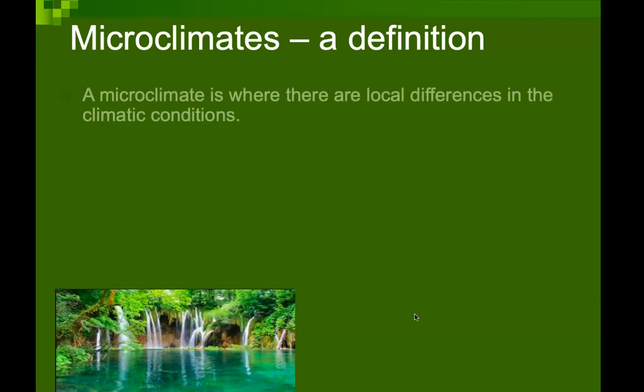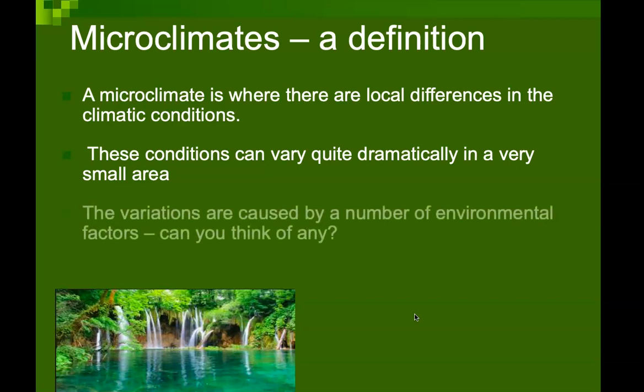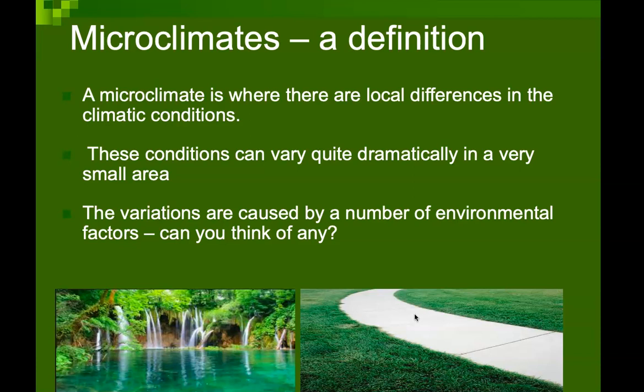Hello friends, today we are going to discuss about microclimate. Microclimate is where there are local differences in the climatic conditions due to some prevailing local features. These conditions can vary quite dramatically in a very small area of a neighborhood. For example, an area located near some water bodies like a pond, or an area located near gardens, will have a different microclimate.